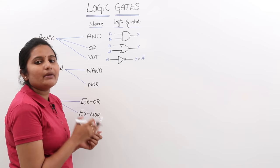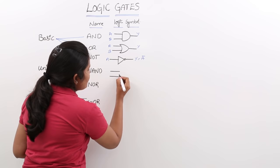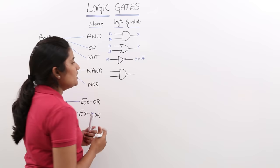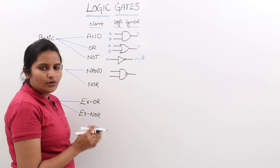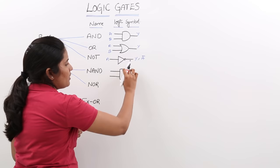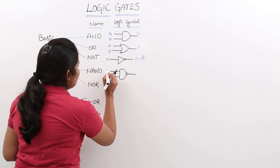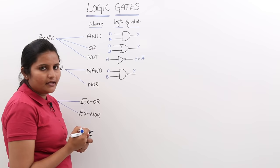We use the same symbol as AND gate with a NOT bubble added. This will give you the NAND gate. NAND gate is equivalent to AND plus NOT. These 2 inputs are A and B and the output is Y.